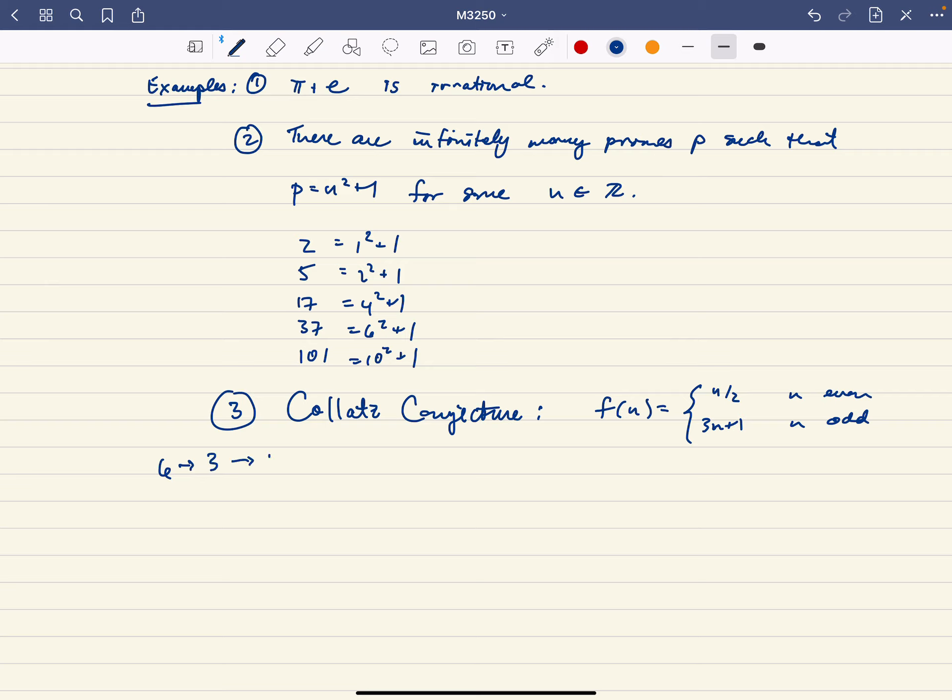3 is odd, so we're going to multiply by 3 and add 1. That'll give us 10, which is even, so that gives us 5, which is odd, so that gives us 16, which is even.